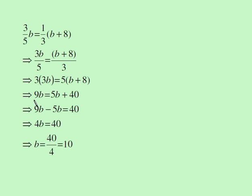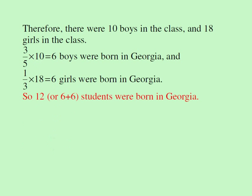The left-hand side is nine b. The right-hand side is five b plus forty. Moving the variables to the same side: nine b minus five b is four b, which equals forty. So b equals forty over four, or ten.